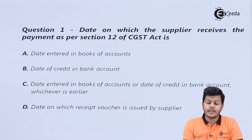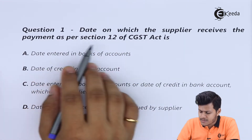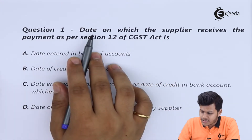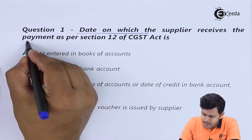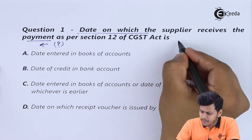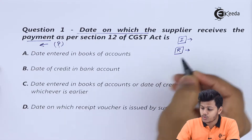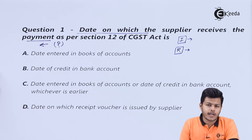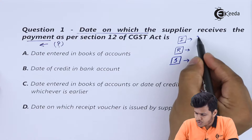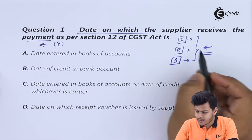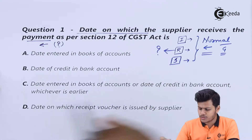Question number 1 MCQ है। Section number 12 of CGST Act के अनुसार, जिस date पर supplier payment receive करता है - वो date कौन सी होती है? यहाँ पर दो parameters होते हैं जिनको हम use करते हैं time of supply तक पहुचने के लिए - एक invoice date, दूसरा payment receive date। और एक तीसरा होता है supply की date। इन तीनों में से हम choose करते हैं और earliest of all लेते हैं।